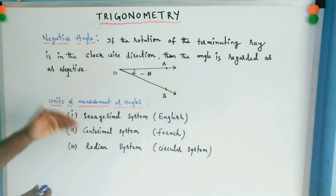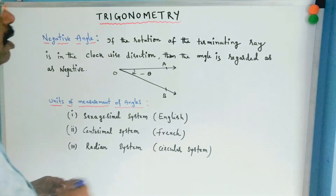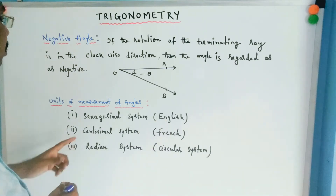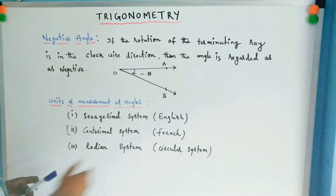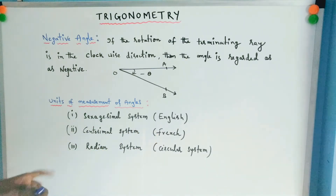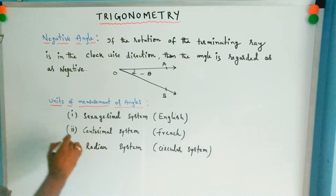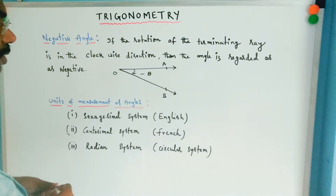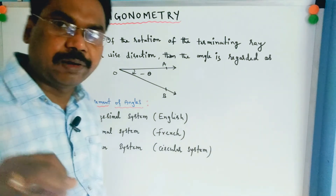Next, units of measurement of angles. There are three systems: the first is the sexagesimal system or English system, the second is the centesimal system or French system, and the third is the radian system or circular system.